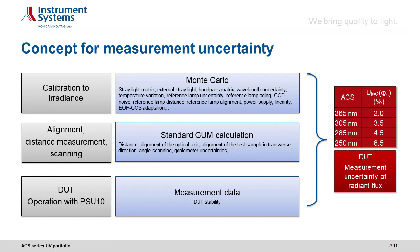Many factors of influence are taken into account in the Monte Carlo simulation. These include the stray light matrix, wavelength measurement uncertainty, temperature variation, CCD noise, power supply, and others. All changes to these influencing variables are measured in a simulation and can contribute to overall measurement uncertainty. The simulation can be supplemented experimentally by further calculations, such as the measurement of distance, alignment of the optical axis, alignment of the test sample in a transverse direction, angle scanning, and the uncertainties of the goniometer itself. The basis for this procedure is the standard GUM procedure as described in the Guide to the Expression of Uncertainty in Measurement.